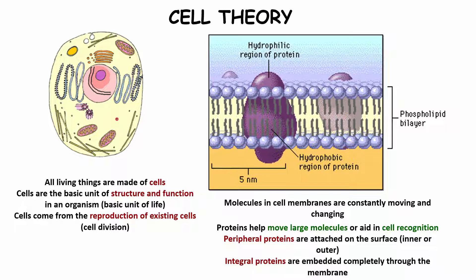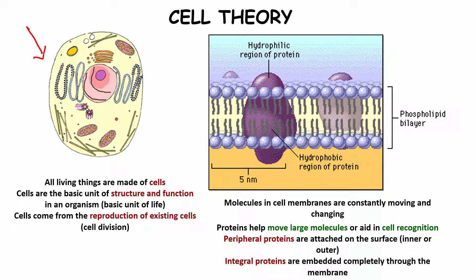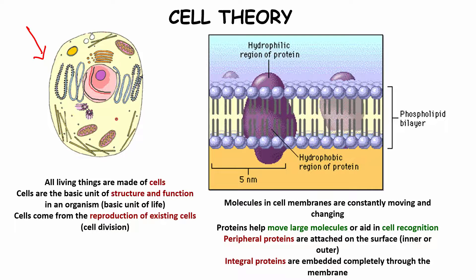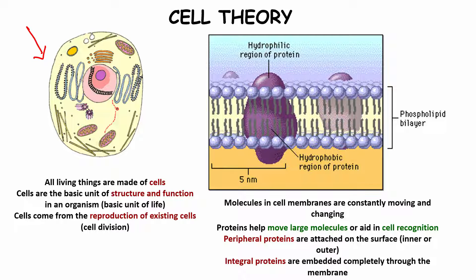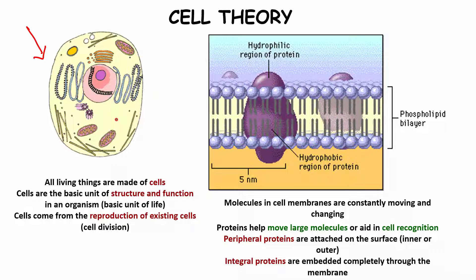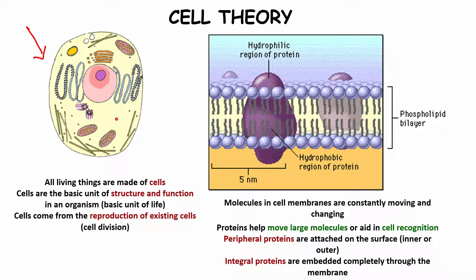To summarize cell theory: all living things are made up of cells; cells are the basic unit of structure and function in an organism and the basic unit of life; and cells come from the reproduction of existing cells — that is cell division.